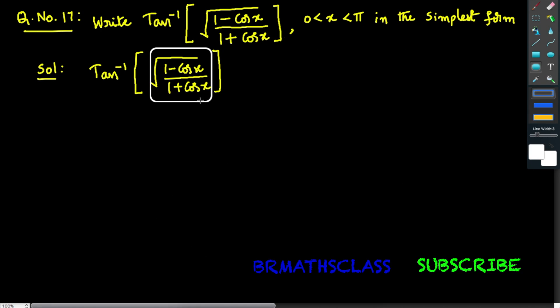You observe this: square root of (1 minus cos x) divided by (1 plus cos x). I want to write this expression in the form of tan, so that I can use tan inverse of tan theta formula at the end.